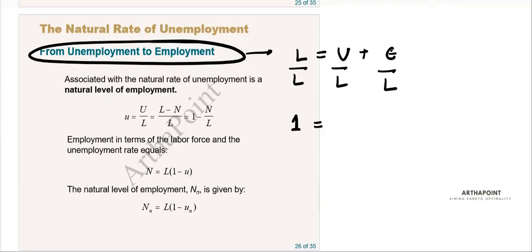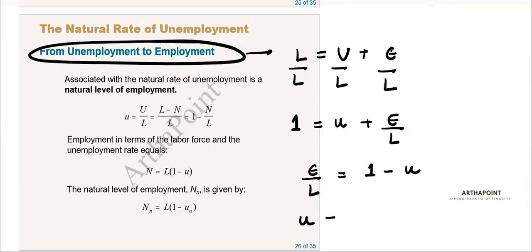I get: 1 equals u/L (unemployment rate) plus employment rate. So employment rate equals one minus unemployment rate, and unemployment rate equals one minus employment rate. So unemployment rate u equals one minus n/L, where n/L is the employment rate.